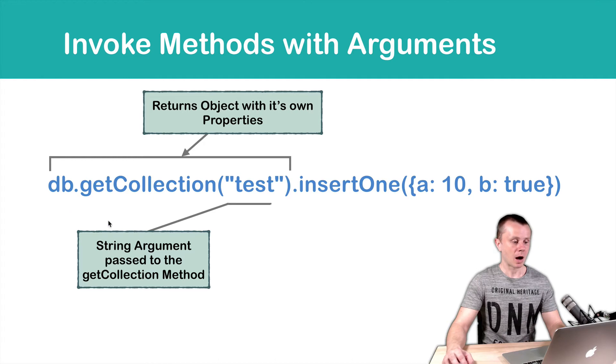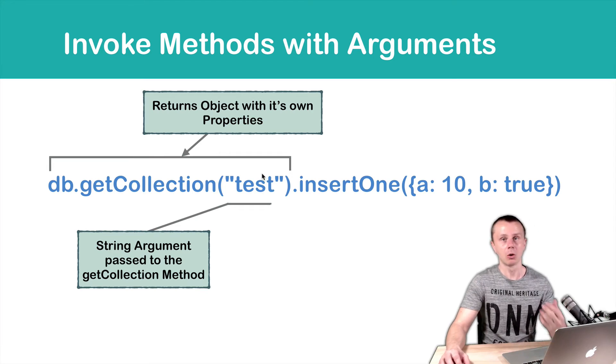Then after execution of this method, we execute it because we use parentheses with arguments, and this method will return us an object that also has its own properties. And then we access the insertOne method of this new object.